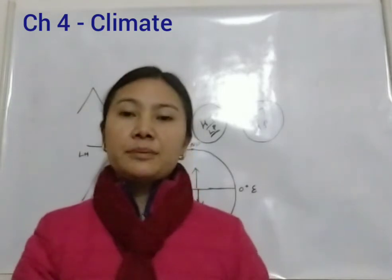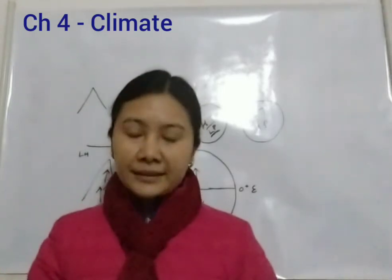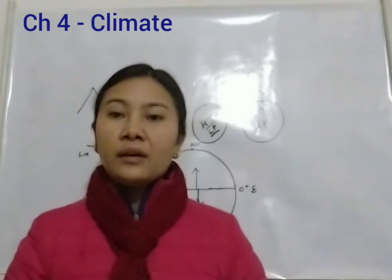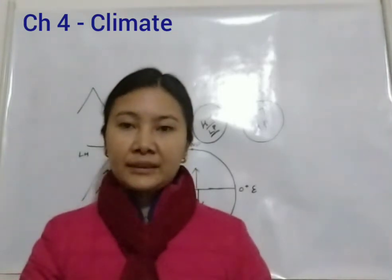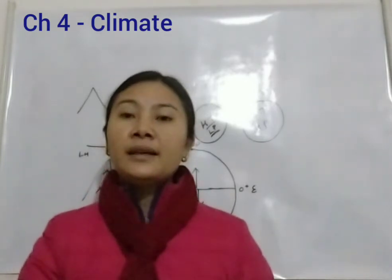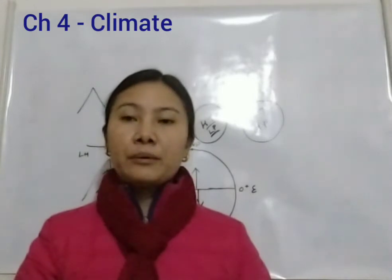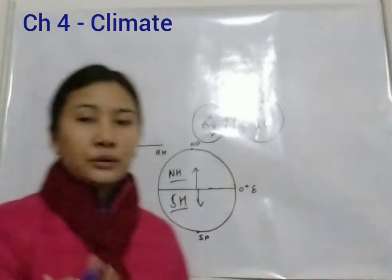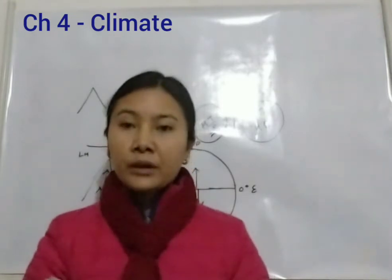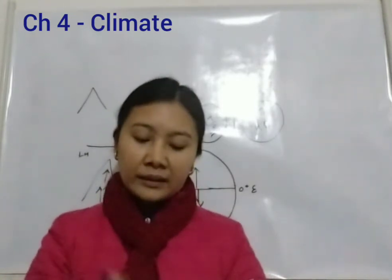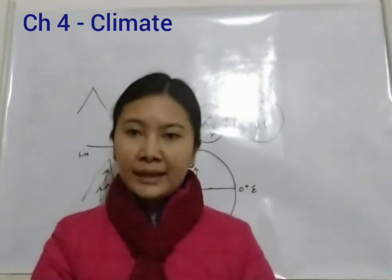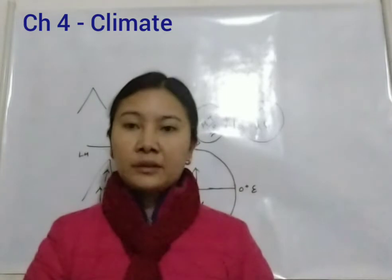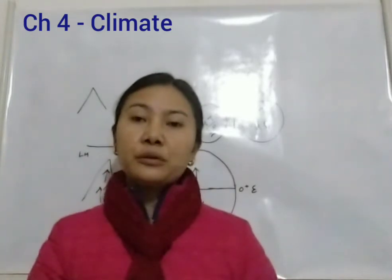The pressure and wind system of any area depends on the latitude and altitude of the place. High pressure corresponds to low temperature and vice versa. Latitude refers to imaginary horizontal lines and altitude is the height above sea level. This influences temperature and the rainfall pattern, including snowfall.